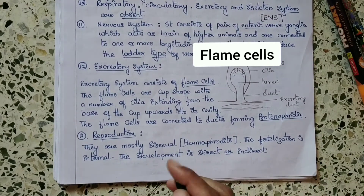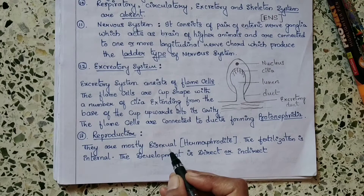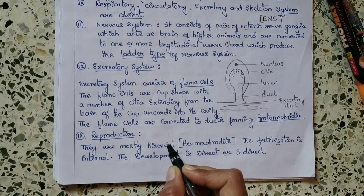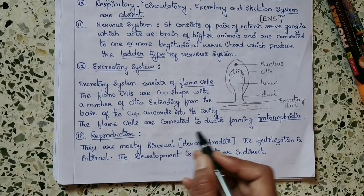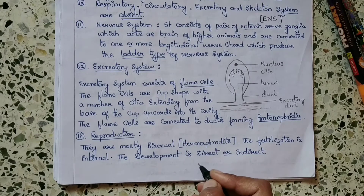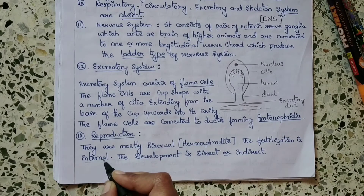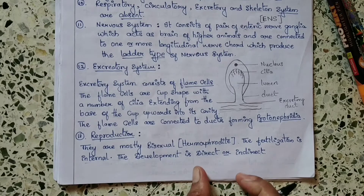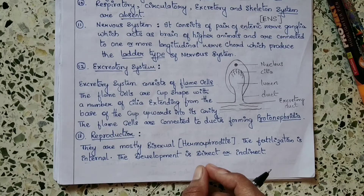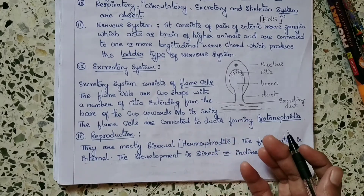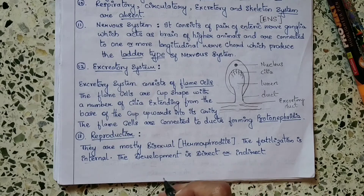Coming to reproduction, they are mostly bisexual, also called hermaphrodites, meaning both male and female organs are present in a single organism. Fertilization is internal and development is direct or indirect, meaning the organisms may have a larval stage or may not have a larval stage.